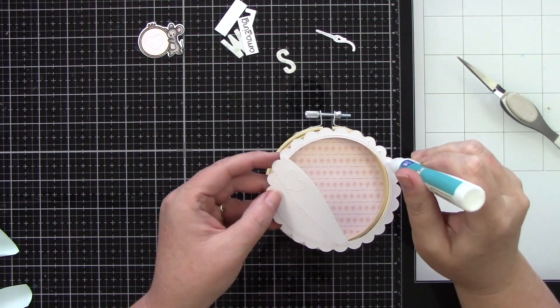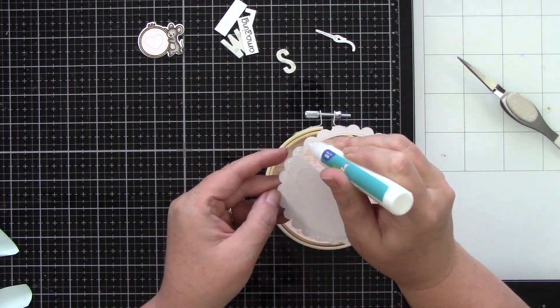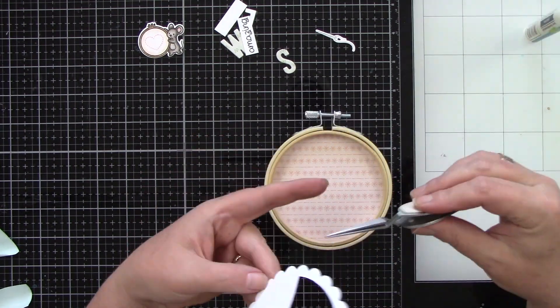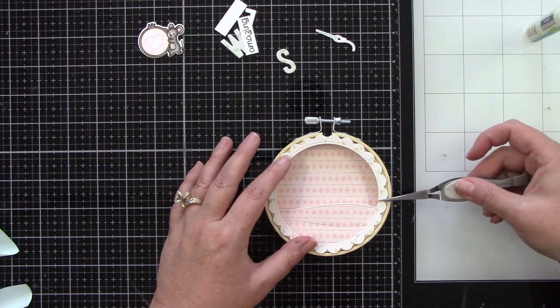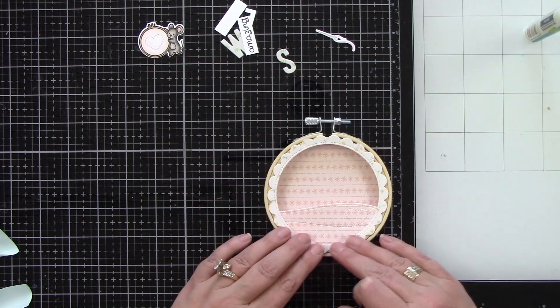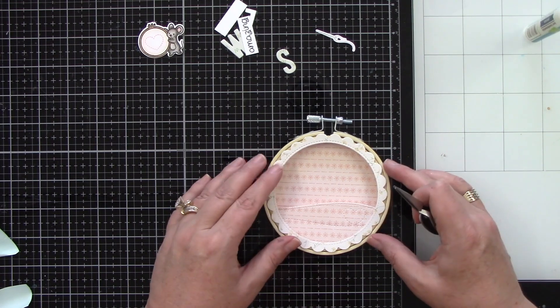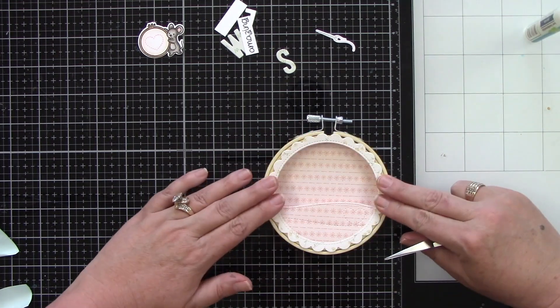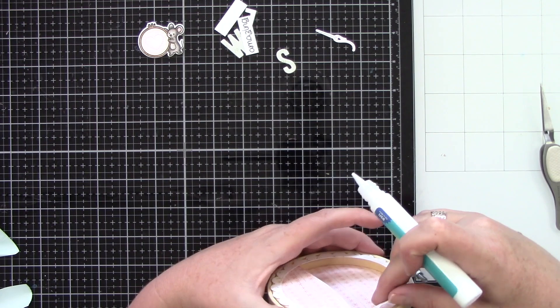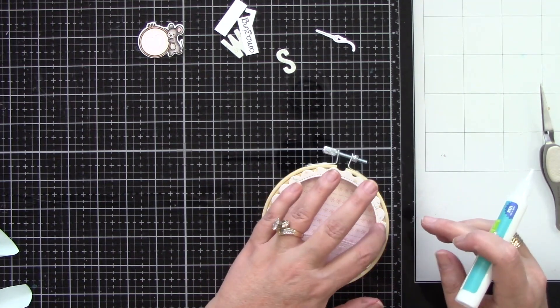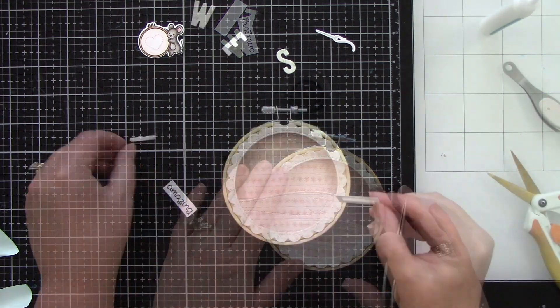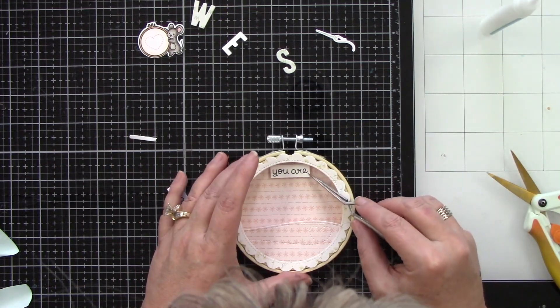And now we can start laying this out. I'm adding dots to the scalloped frame. Just a little bit of dots of glue. Not doing too much. Placing that on the front and I love that this scalloped frame. This is the largest one from the stitched scalloped frames and I love that you can still see the embroidery hoop on the front on the outside.